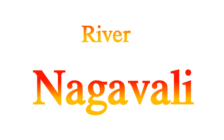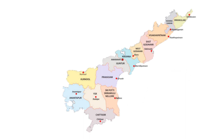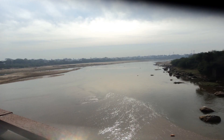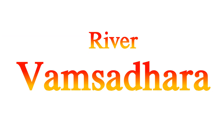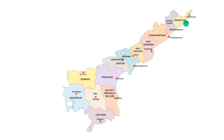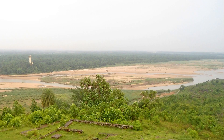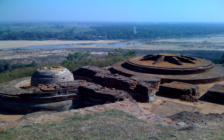Next, about River Nagavali. Nagavali River flows through Vizianagaram and Srikakulam districts in A.P. and merges with the Bay of Bengal at Kalingapatnam. This is the Nagavali River view at Kalingapatnam. Next, about River Vamsadhara. Vamsadhara River flows through Srikakulam district in A.P. and joins the Bay of Bengal at Kalingapatnam. This is the aerial view of River Vamsadhara at Kalingapatnam and the bank of River Vamsadhara.